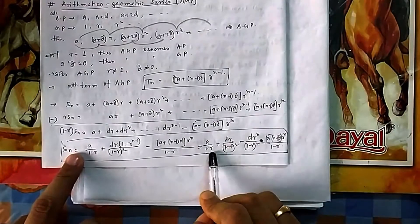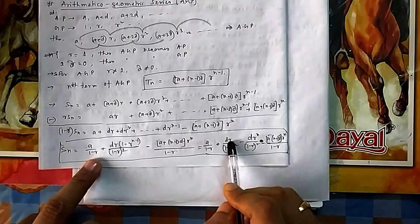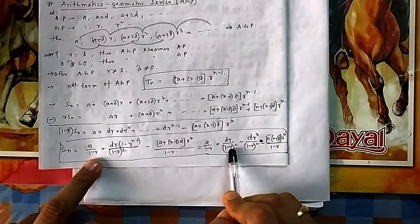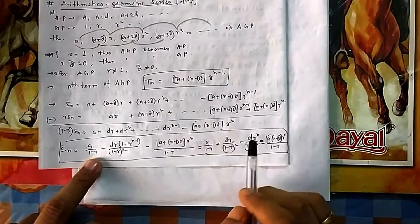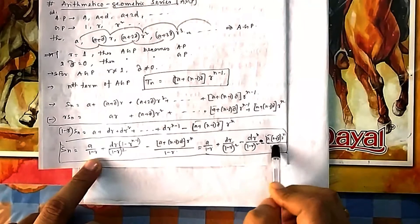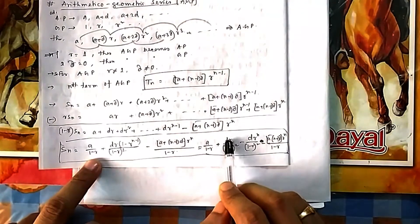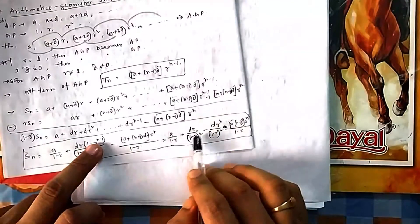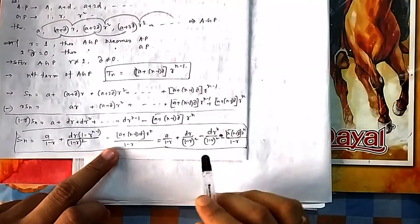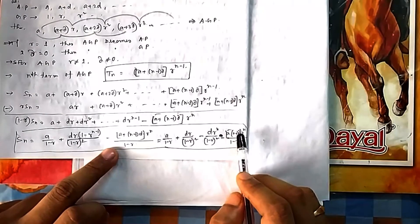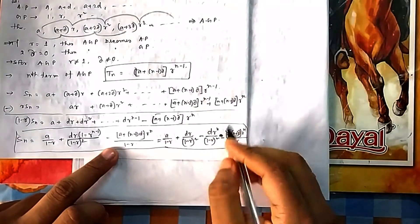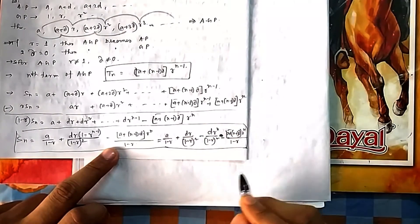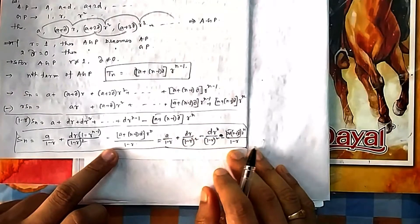The final formula for the sum of an AGP is: Sₙ = a/(1−r) + dr/(1−r)² − [a + (n−1)d] · r^n / (1−r). This combines an infinite GP format term, a middle term involving dr/(1−r)², and a final term with r^n that accounts for the finite number of terms.